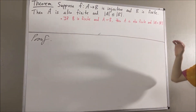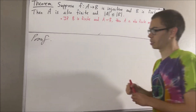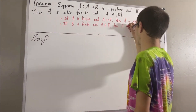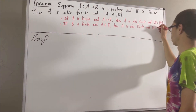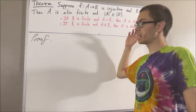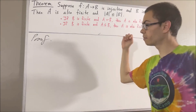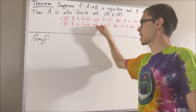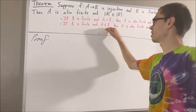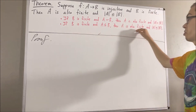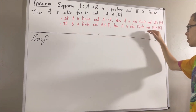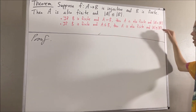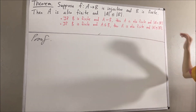Here's the second preliminary result. Given any two sets A and B, if B is finite and A is a subset of B, then A is also finite, and the number of elements in A is less than or equal to the number of elements in B.